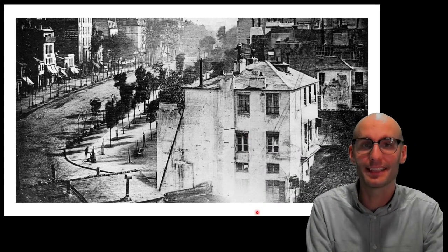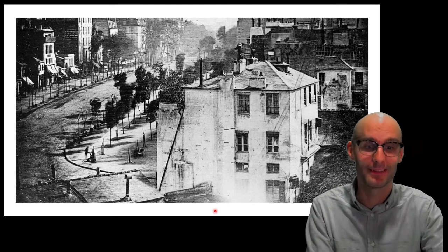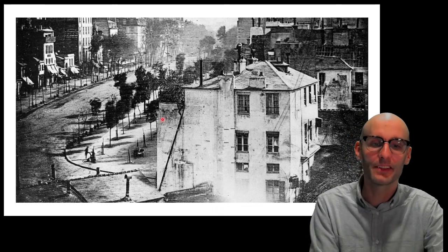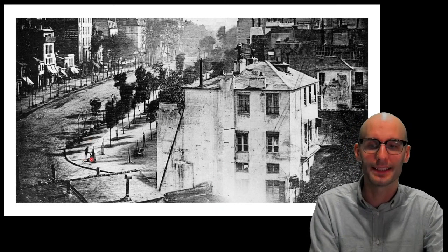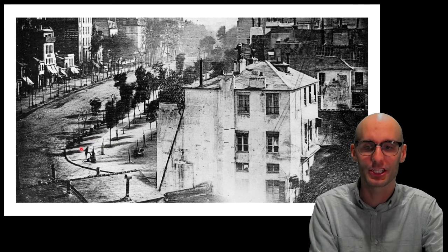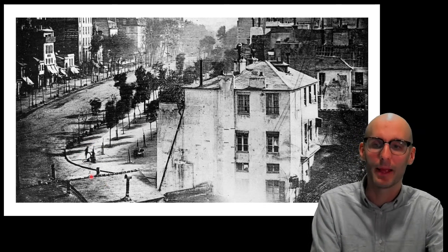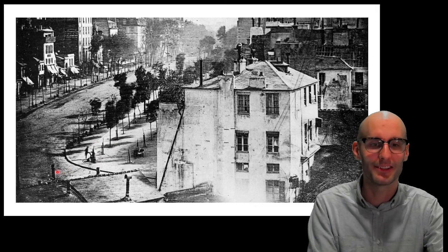And, in fact, silver stains is how black and white photography worked for decades and decades and decades. This is the first black and white photo that contained humans. Here's a man getting his shoe shined down there. And, so, this is believed to be the first photo that contains humans.